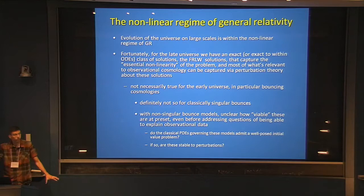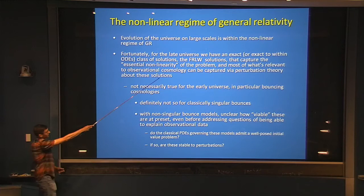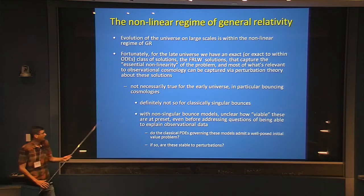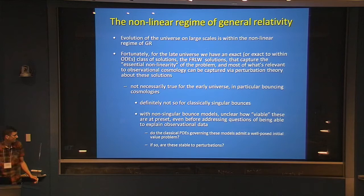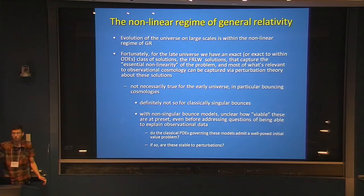We want to focus on the early universe and go into places where we might have to go beyond general relativity. This property of having an exact solution doesn't necessarily hold for the early universe, and we definitely know it won't hold for classically singular bounces. Things are so bad there that it's not just that we have to deal with nonlinearities away from FRW — we probably have to go to a different theory entirely. The evolution takes us to a regime where we need quantum gravity.